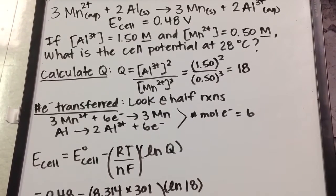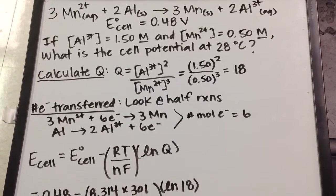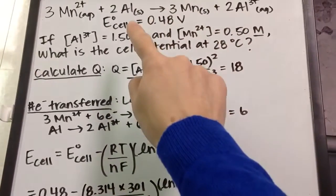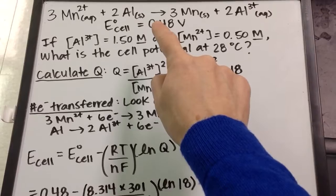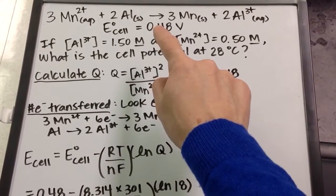Let's talk about how we calculate E-cell under non-standard conditions. Just a reminder what the difference is. This value of E-cell refers to concentrations of 1 molar and a temperature of 25 degrees Celsius.